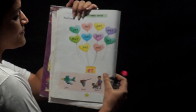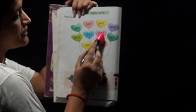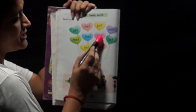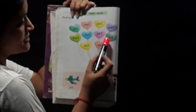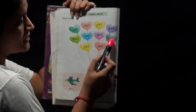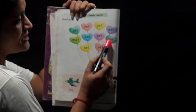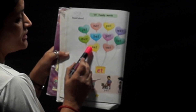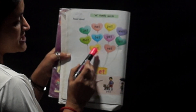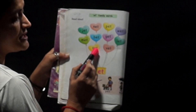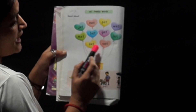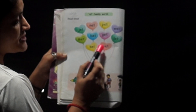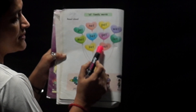Next word: G-E-T — Get. Next: L-E-T — Let. Next word: S-E-T — Set. And last one: V-E-T — Vet.